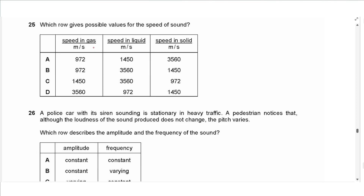Question 25 says: which row gives possible values for the speed of sound in a gas, liquid, and solid? In gas (like air) the speed is around 340 m/s, so it should be in the hundreds. In liquids like water it is about 1500 m/s. In solids like steel or concrete it is around 5000 m/s. The answer is A.